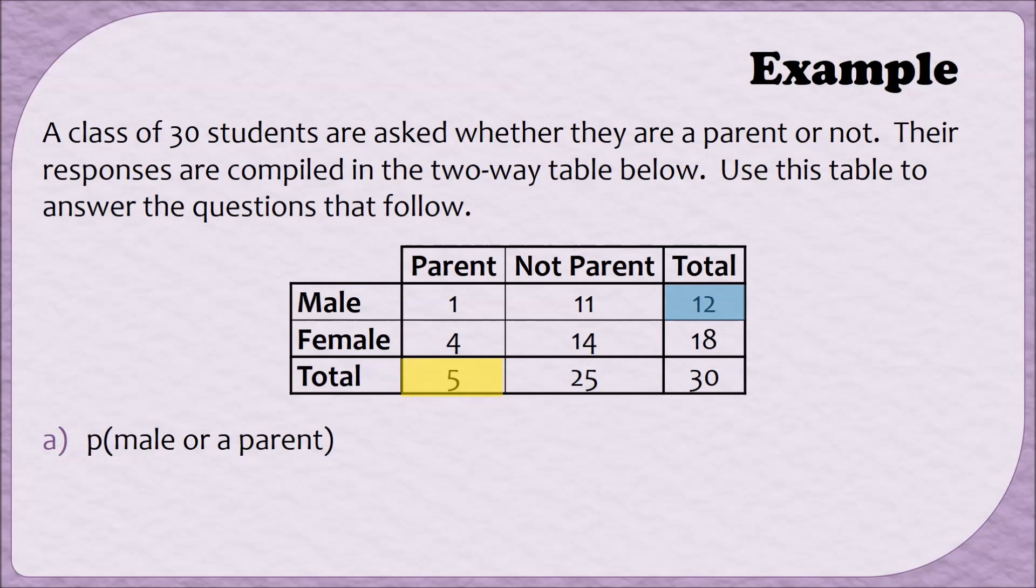In this case that total of 12 males includes the one person who is both male and parent. Similarly the total for five parents also includes that one person who is both a male and a parent. So if I were just to use the 12 and the 5 to compute my total I would be double counting this one person who overlaps both that row and the column. So in order to adjust for that double counting I could add 12 and 5 together and then subtract the one. Then I would still keep the same denominator of 30 because there's 30 people. And when I simplify my numerator I end up with once again 16 out of 30 or 0.53.